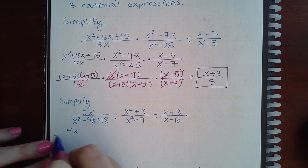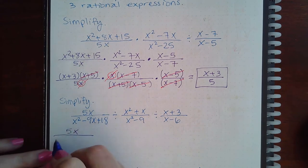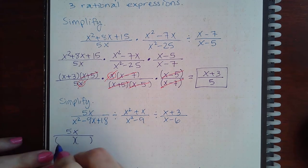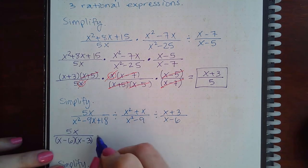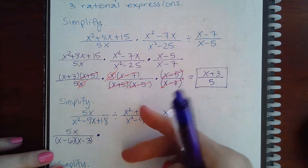So I'm going to have 5x. And instead of rewriting this, I'm going to use its factored version. So x minus 6, x minus 3.